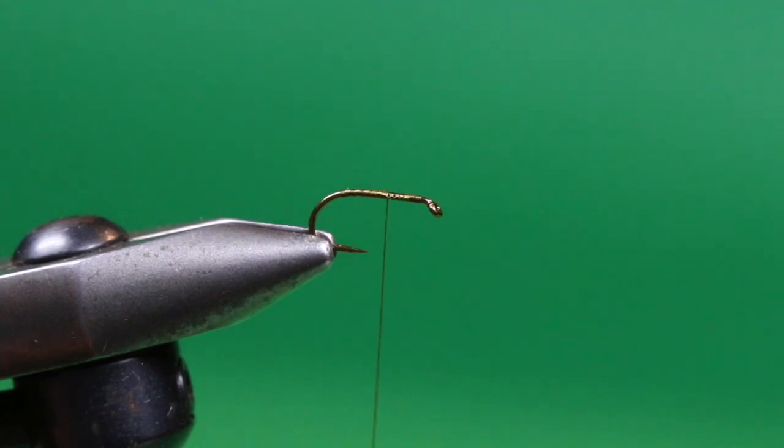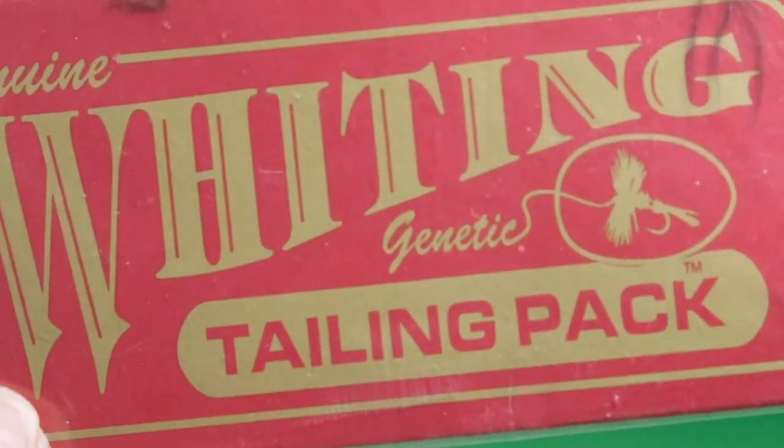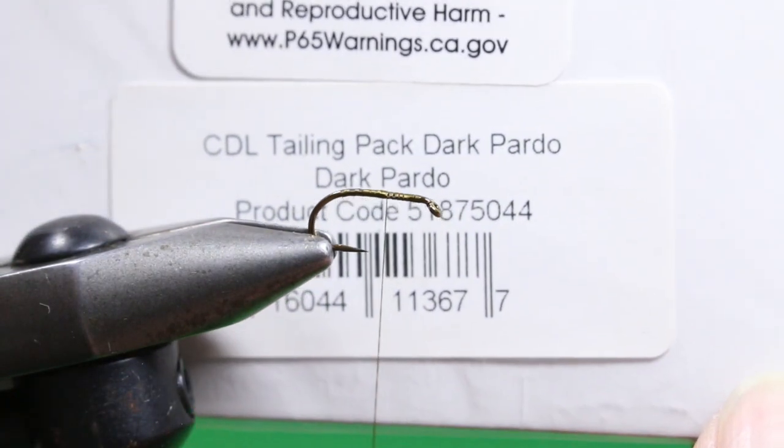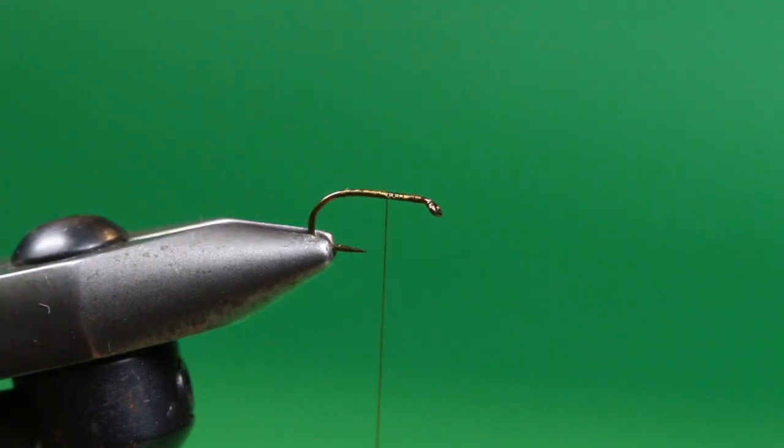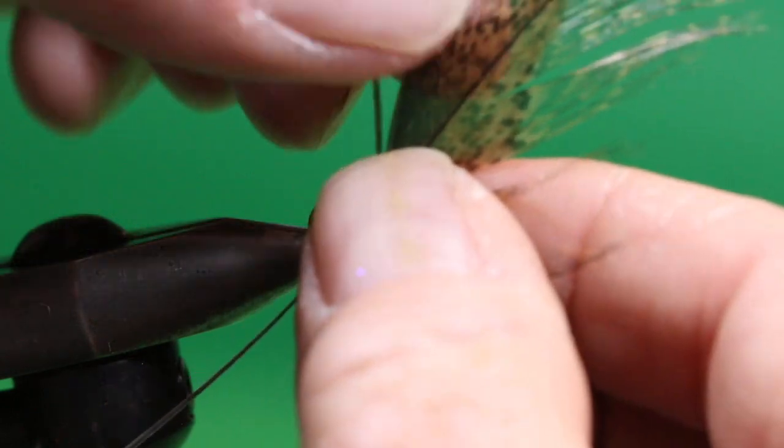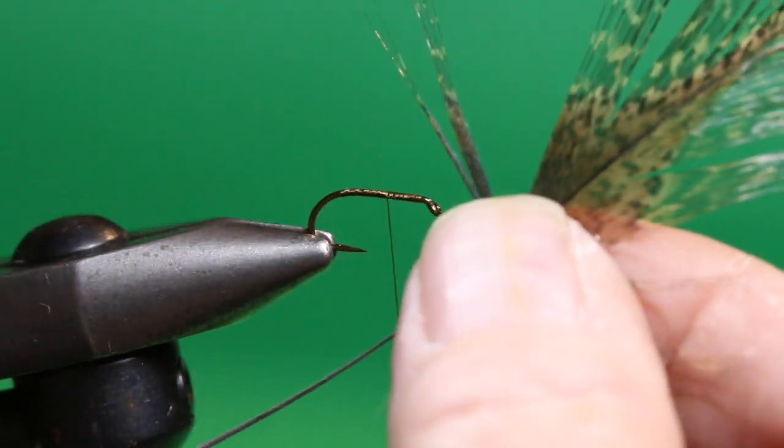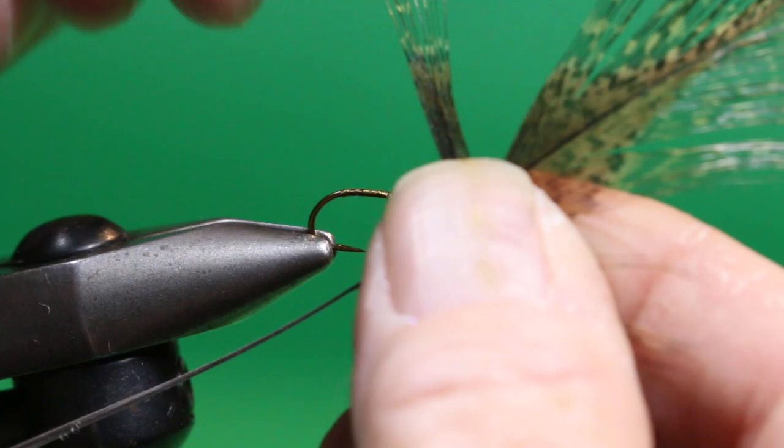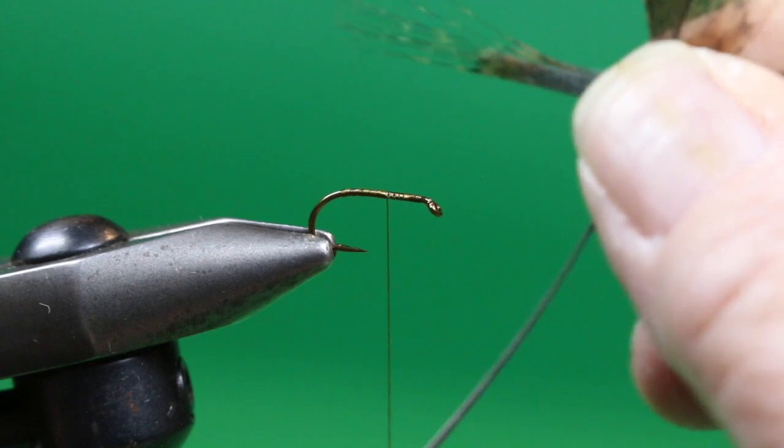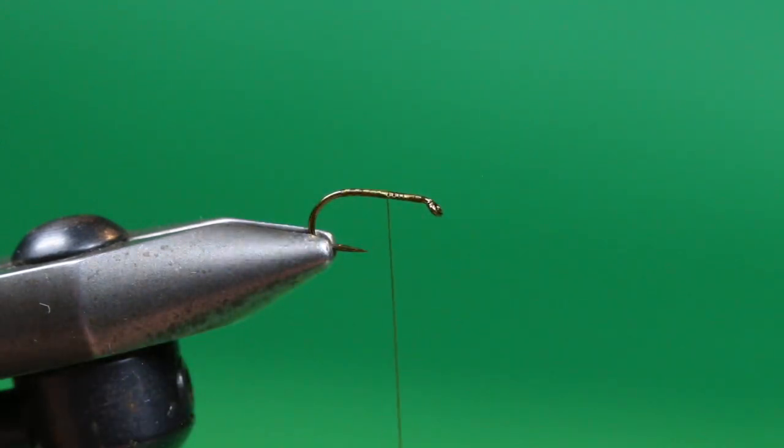For the tail, I'm going to use some Whiting Côte de Léon. This is a Côte de Léon tailing pack, the Dark Pardo Côte de Léon tailing pack. I'm just going to take a feather out of the package and isolate about 8 to 10 fibers. I'm going to pull them perpendicular to the stem to even up the tips, then carefully remove them once I've evened them up.